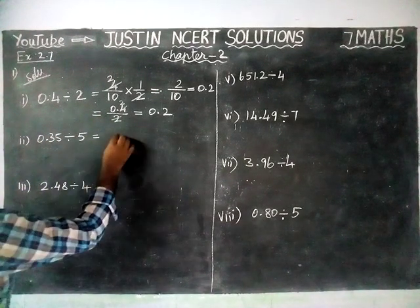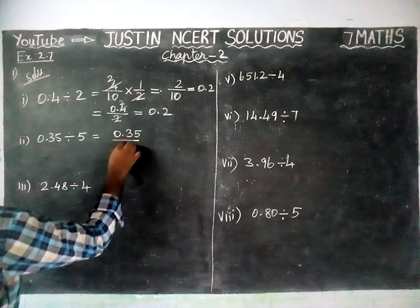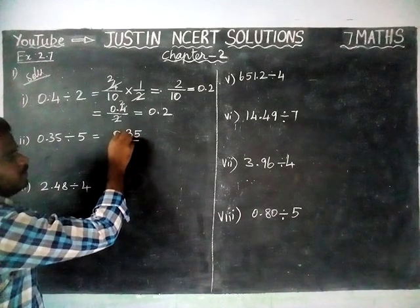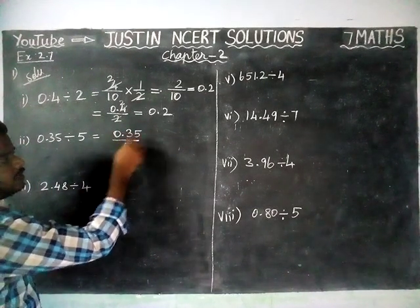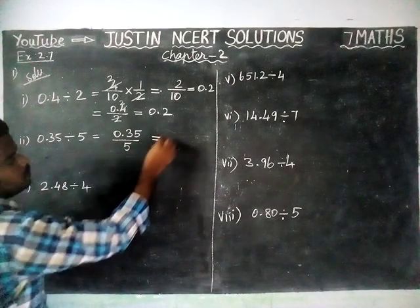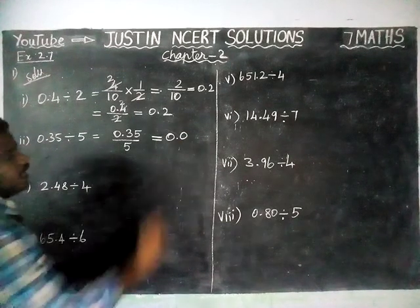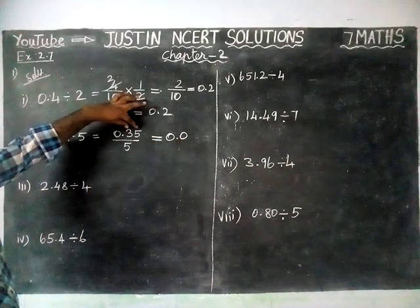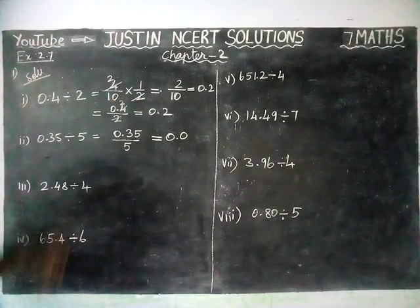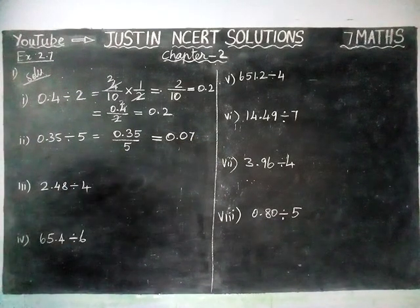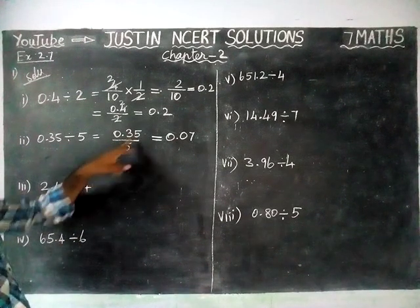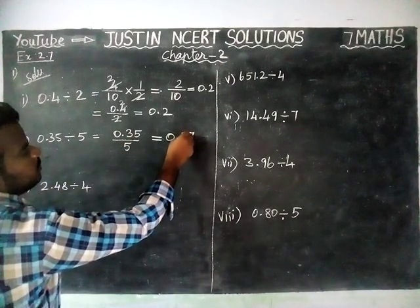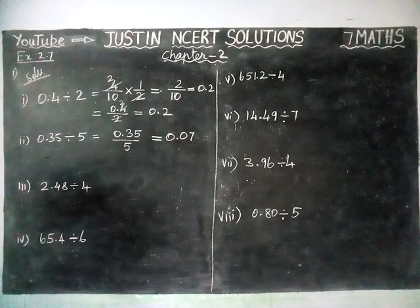Second question: 0.35 divided by 5. After the decimal point, 3 cannot be divided by 5, so we write 0.0 and take the two digits together as 35. 7 fives are 35. We need two decimal points, so the answer is 0.07.